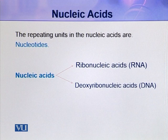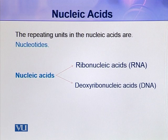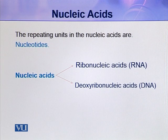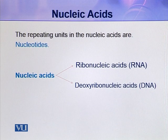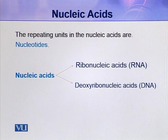Nucleic acids are mainly of two types: ribonucleic acid (RNA) and deoxyribonucleic acid (DNA). There are three types of RNAs: tRNA (transfer RNA), rRNA (ribosomal RNA), and mRNA (messenger RNA). They have a number of functions to perform in the cell, mainly during protein synthesis.